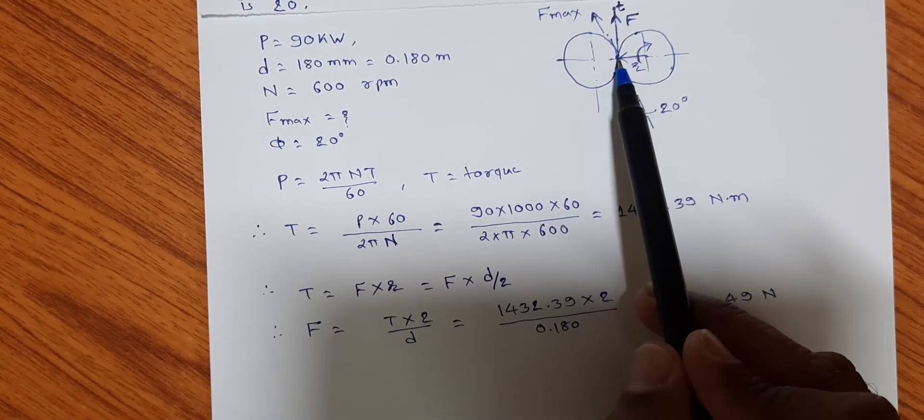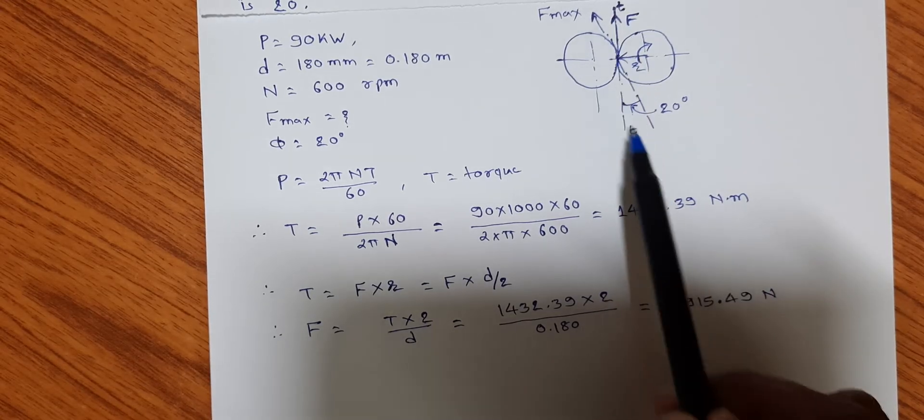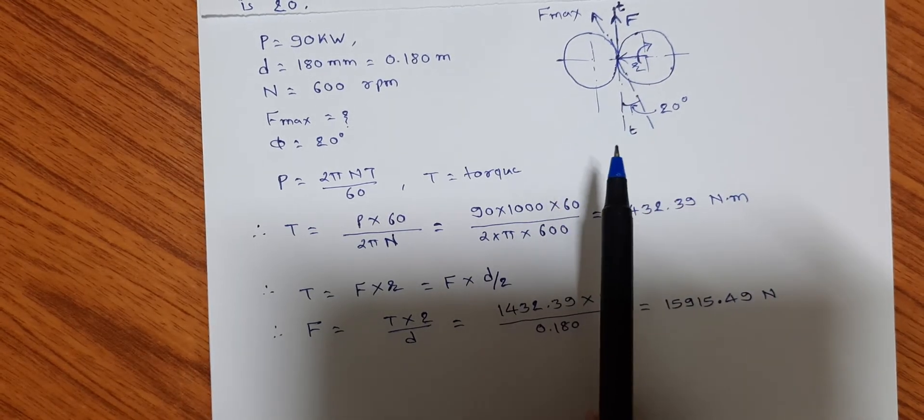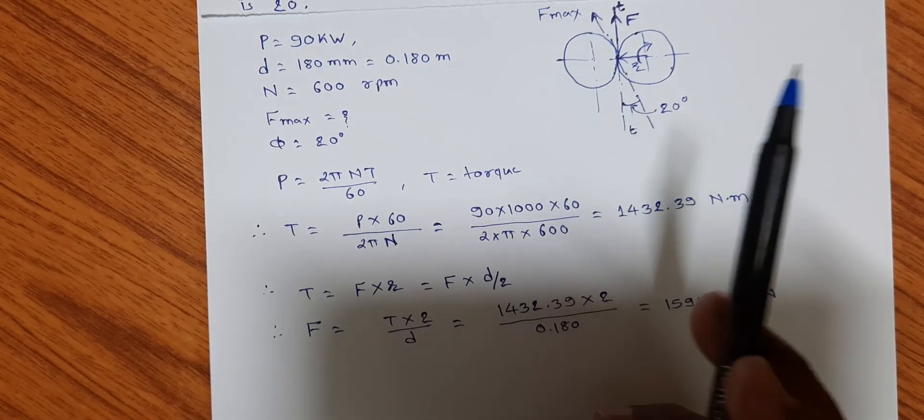Now this is the force acting radially tangentially, perpendicular to radius in direction of the common tangent. But the maximum force is acting in this direction, that is at an angle of 20 degrees.